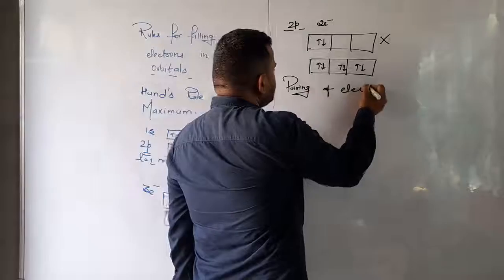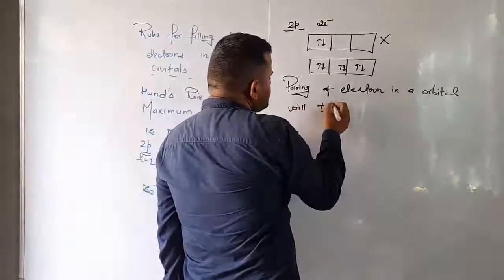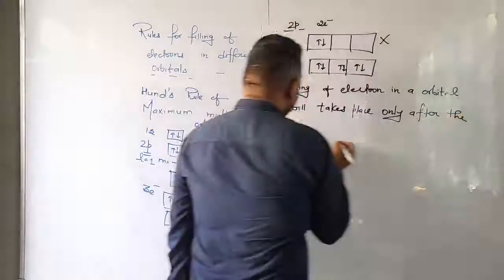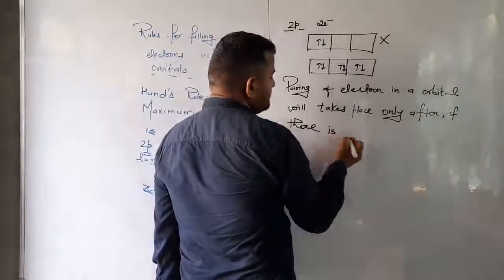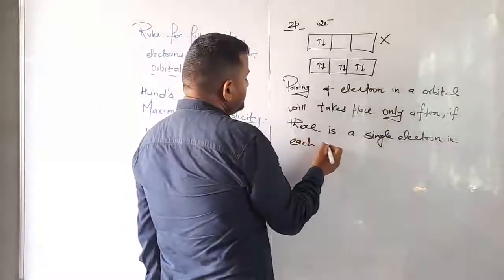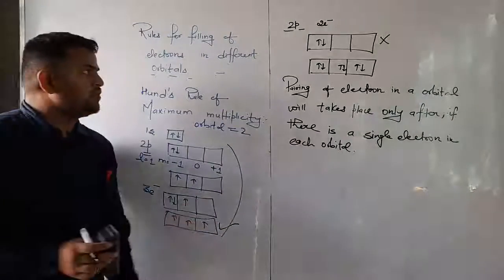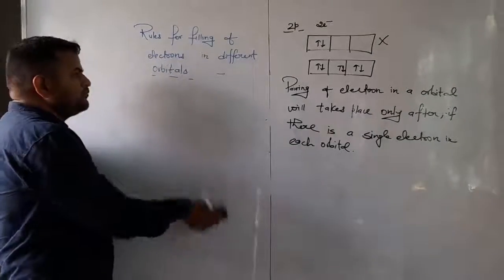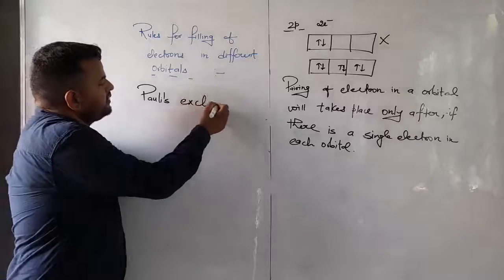According to Hund's rule of maximum multiplicity, pairing of electrons in an orbital will take place only after there is a single electron in each orbital. Every orbital must have a minimum of one electron before pairing begins. This is Hund's rule of maximum multiplicity. The next rule is Pauli's exclusion principle, which is the third rule and a very simple rule.